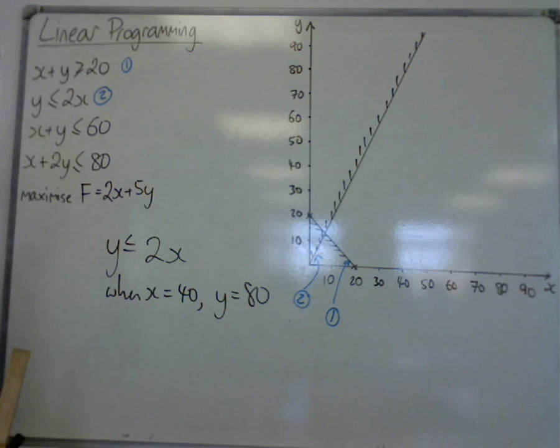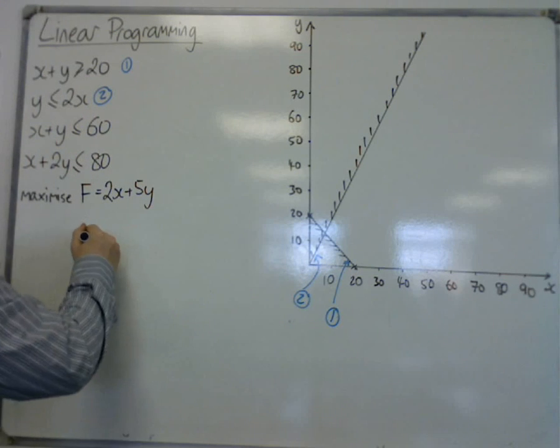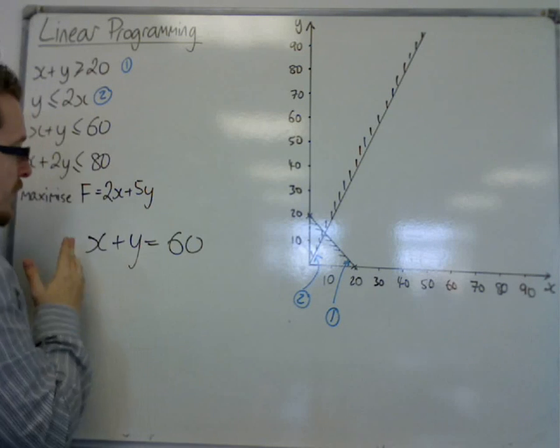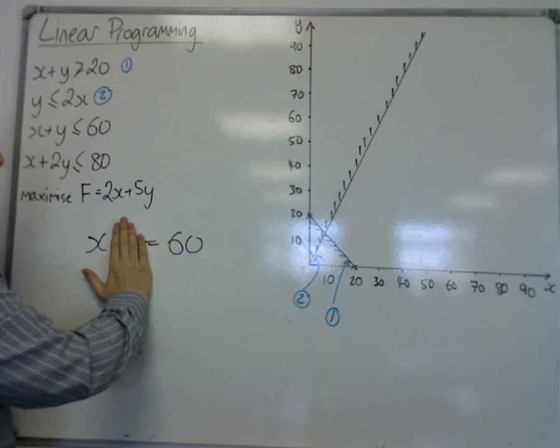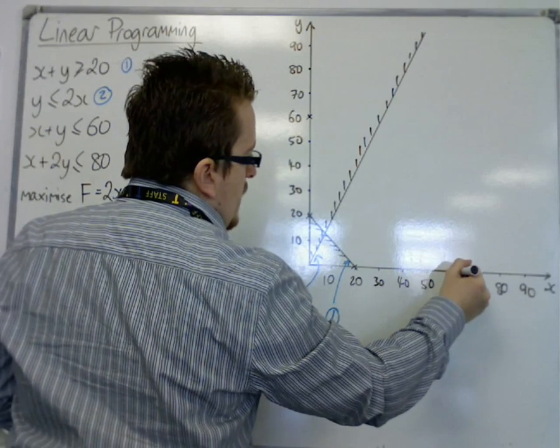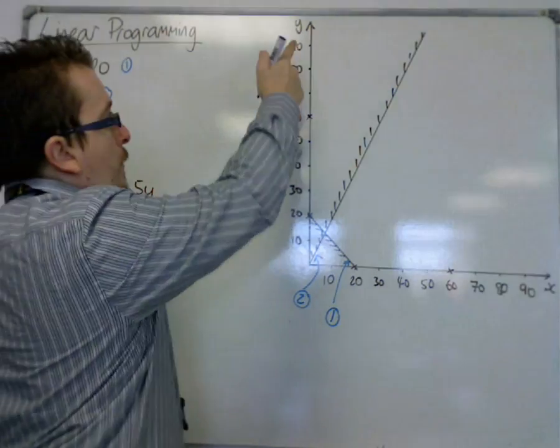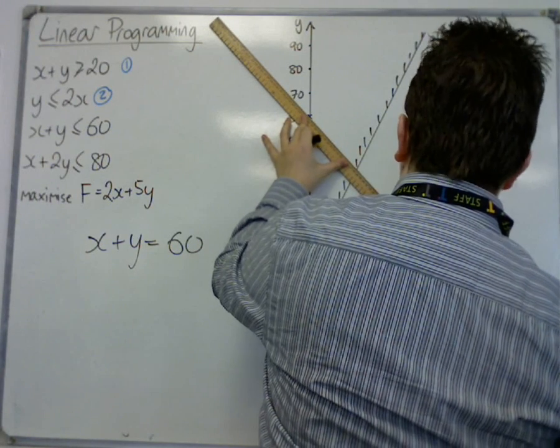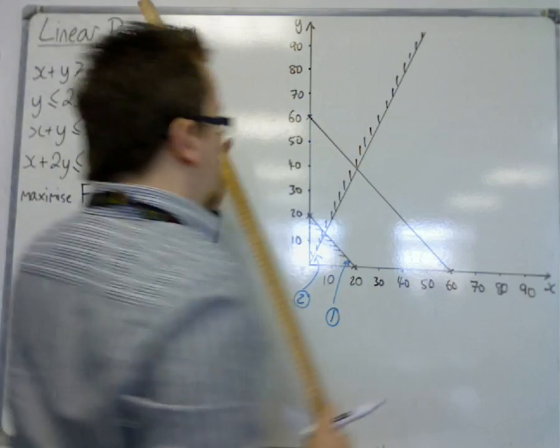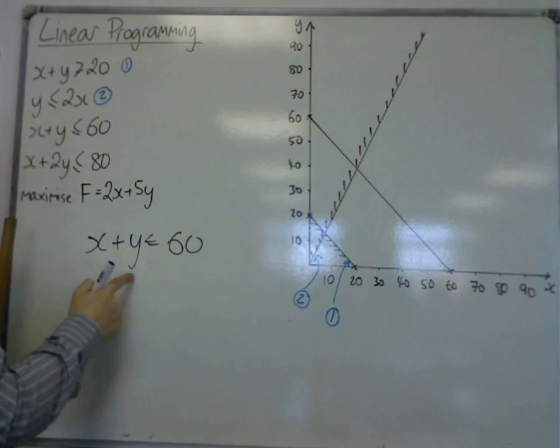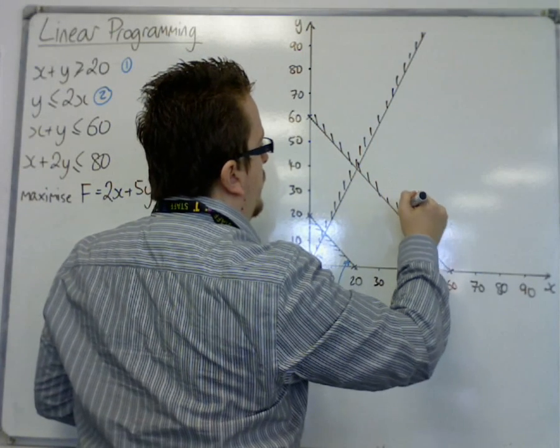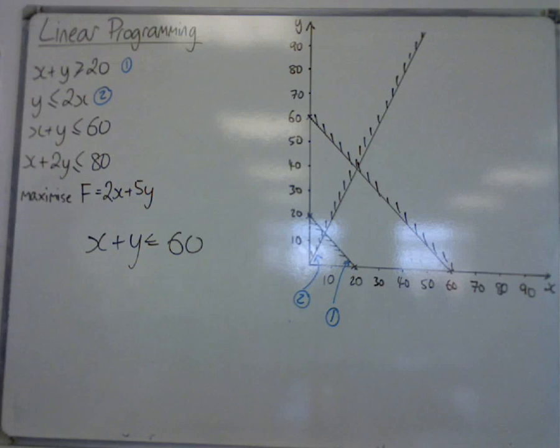Now we've got the third one. x plus y equals 60. So this is very similar to the first one. It's just going through 60 and 60 instead. So when x is 0, y is 60. And when y is 0, x is 60. So you can just go through 60 and 60. So any of these, there's x plus y equals whatever that number. It goes through it on the y axis and it goes through it on the x axis. So x plus y equals 60 looks something like this. Now we want the area where x plus y is less than or equal to 60. So that's below the line. So we want the area below. So we shade the bit that is above. So that's number 3.